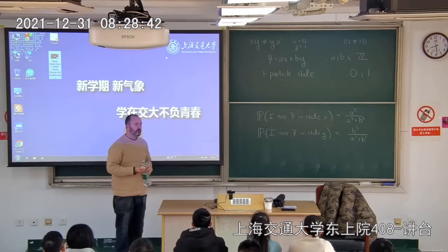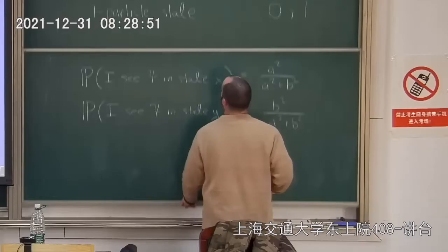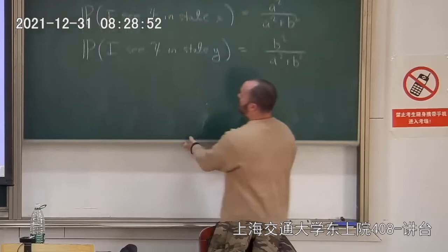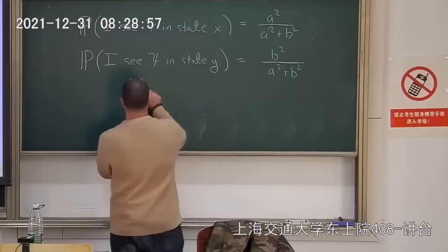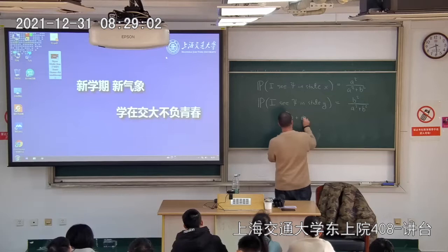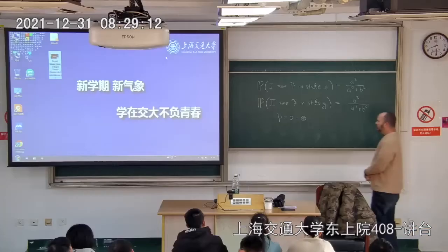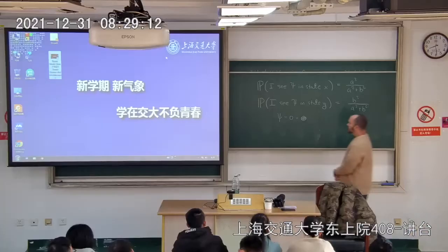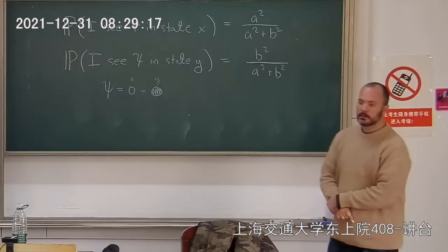From here on, instead of writing states as x and y, I'm going to write them as 'white' and 'black.' So a state might look like white + black or white − black — white is like my x and black is like my y.